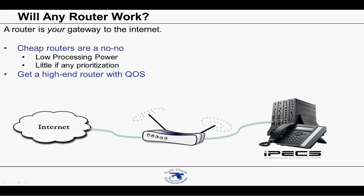You'll want to invest in a higher-end router that has plenty of processing power and can provide quality of service, simply referred to as QoS. QoS is defined as the ability to provide different priority to different applications, users, or data flows, or to guarantee a certain level of performance to a data flow. When using SIP trunking, it's critical that voice traffic going to the internet is prioritized over all other traffic. If your email arrives a second late, it's not a big deal. On the other hand, if a voice packet arrives one second late, your conversation has just become garbled. A properly configured router will use QoS to provide all voice traffic priority over everything else, so that your conversations remain smooth and clear.